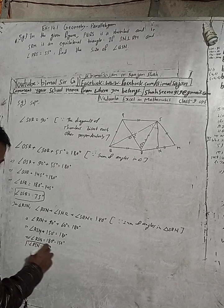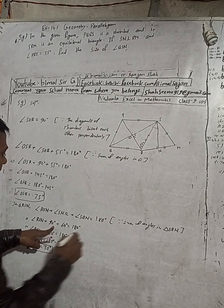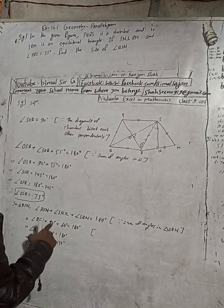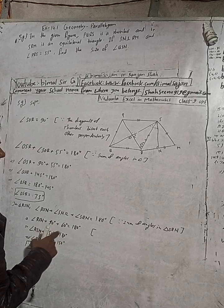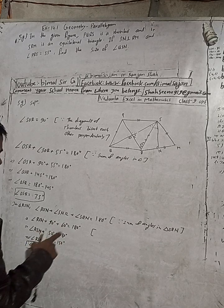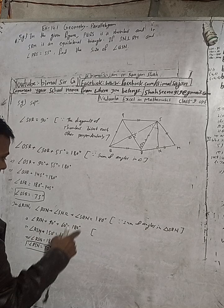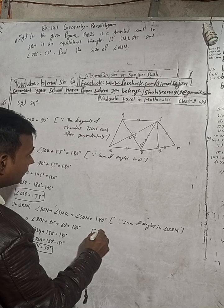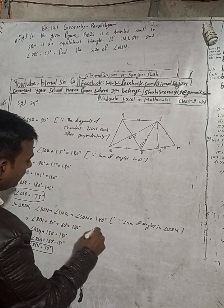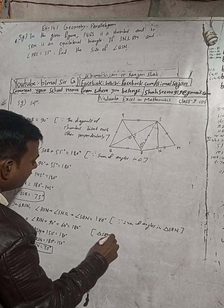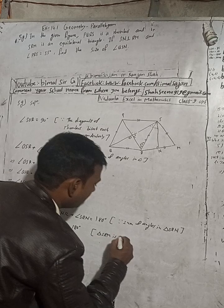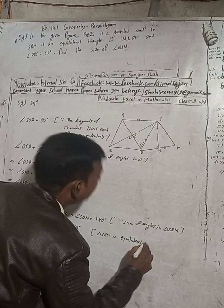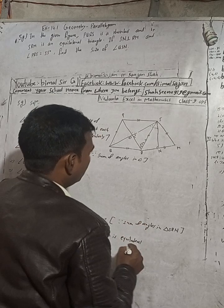The reason: SNR is 90 degrees — this is given. You can see it is given in the figure, so no need to write the reason separately. And SRN is 60 degrees because triangle SRM is equilateral — all angles in an equilateral triangle are 60 degrees.